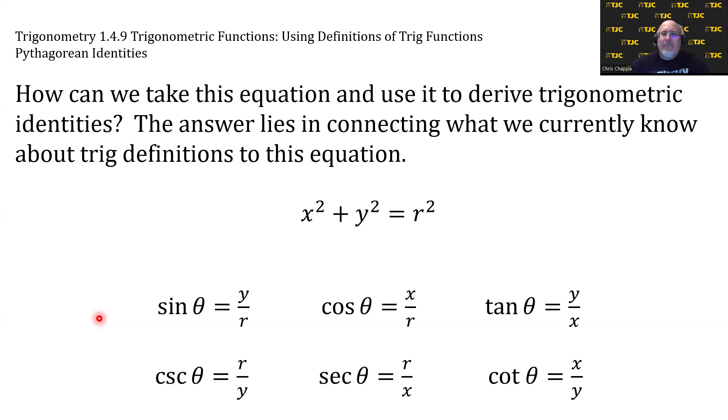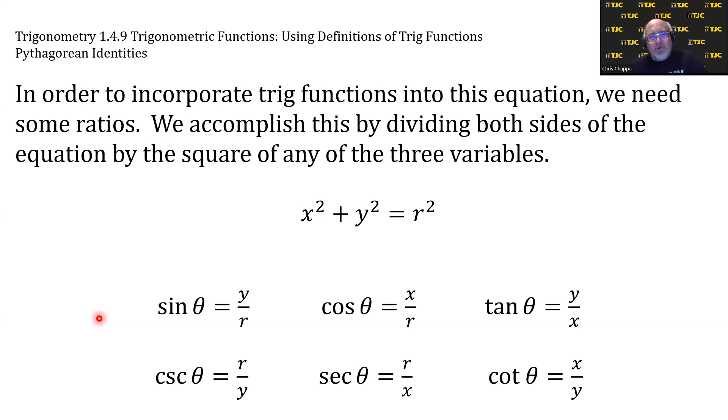So let's think about it. How can we get some of these trig functions into this equation? In order to incorporate trig functions into this equation, we need some ratios. We accomplish this by dividing both sides of the equation by the square of any of the three variables.